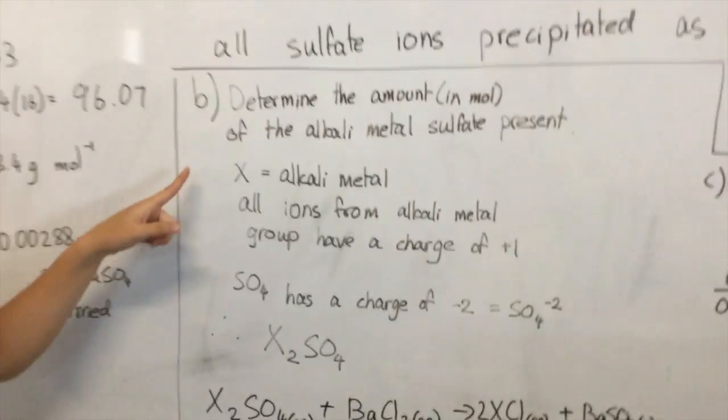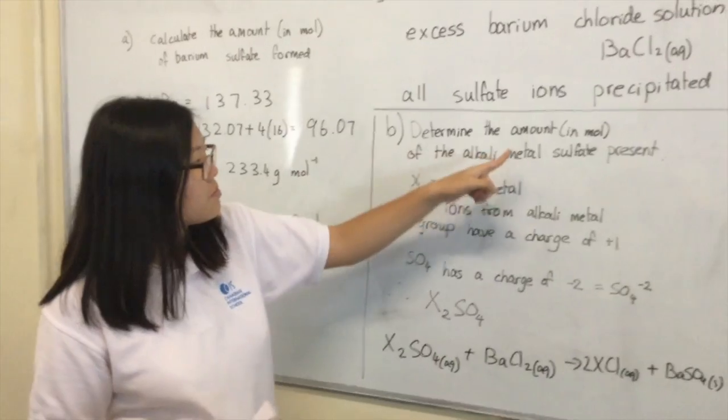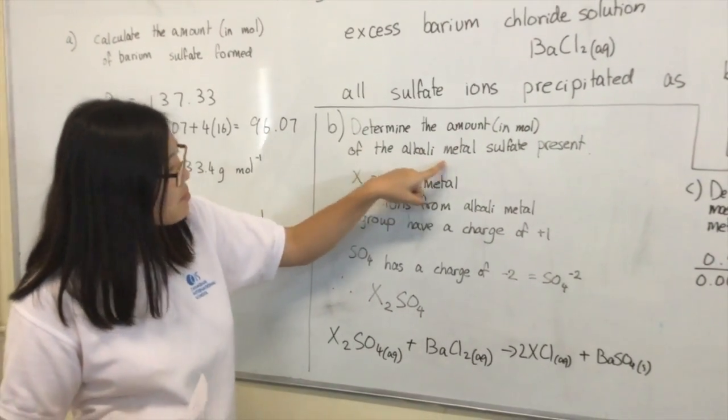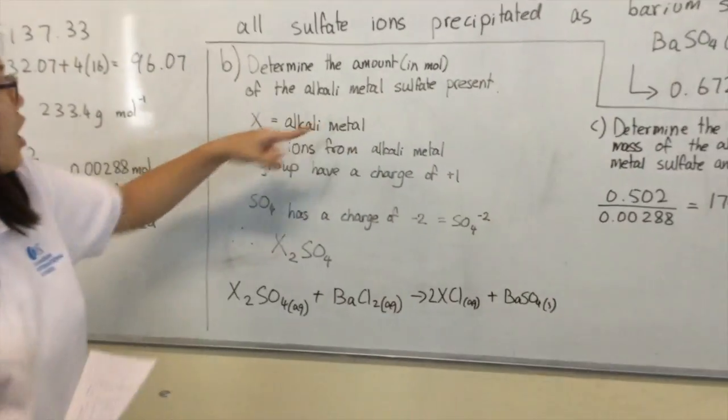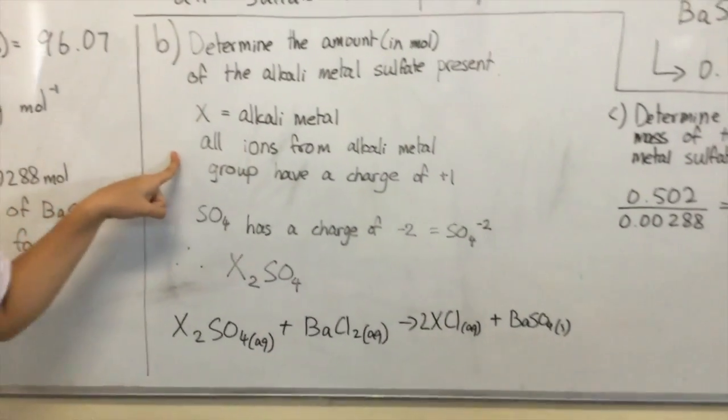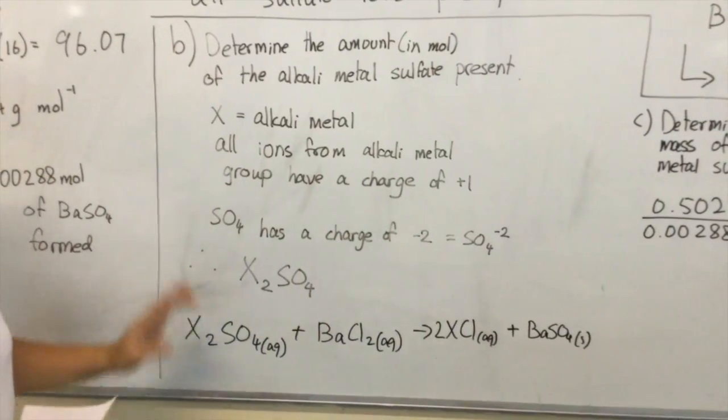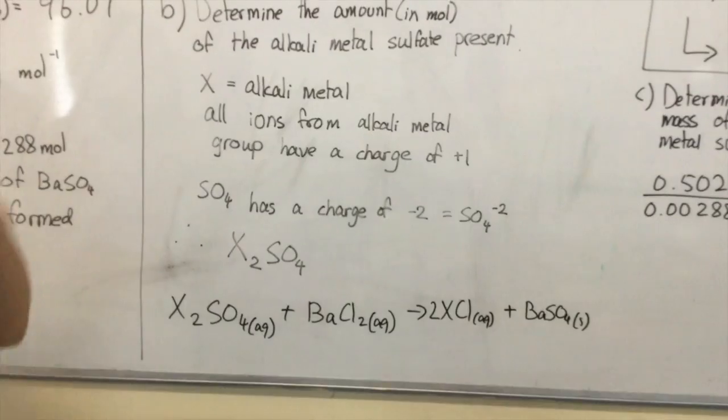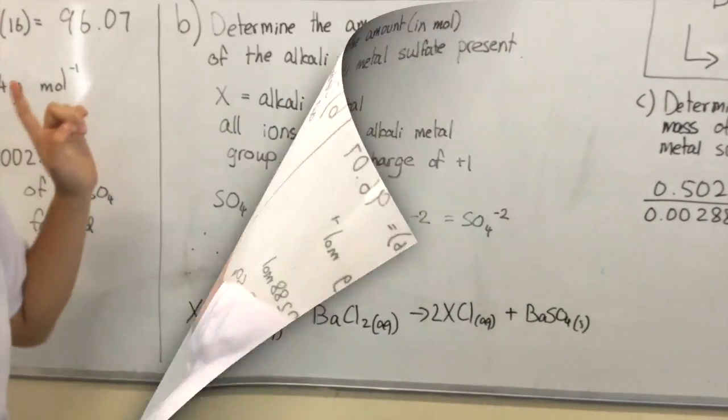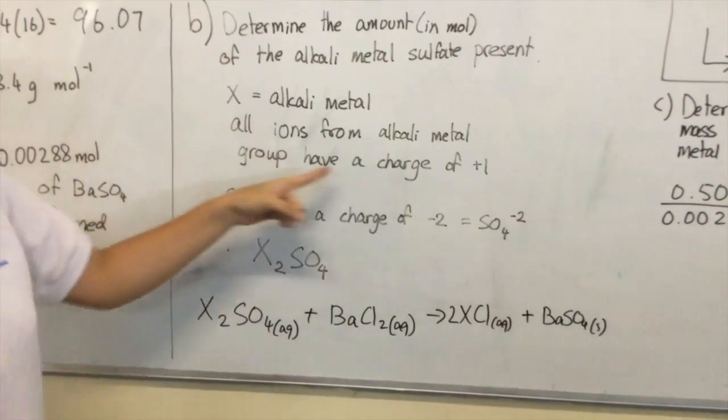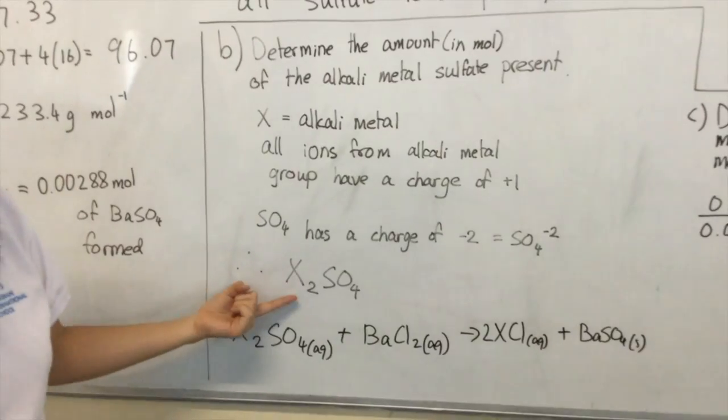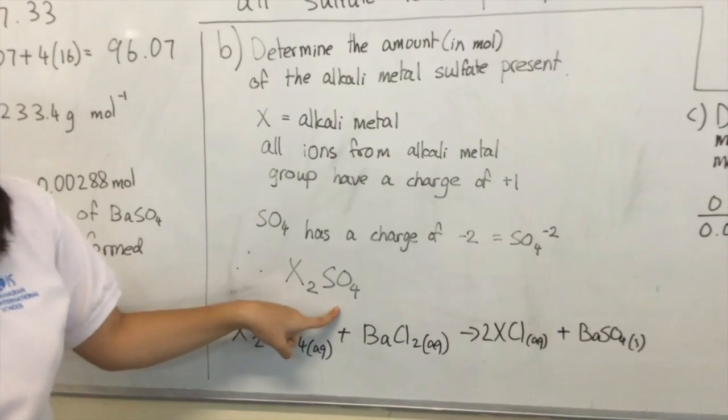The second question: determine the amount in mole of the alkaline metal sulfate present. We need to know how many sulfate is present on the right-hand side of the chemical equation. X is an alkaline metal. All ions from alkaline metal group have a charge of plus 1, so they form X2SO4.